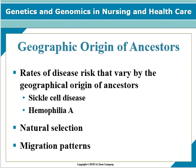Rates of disease risk vary by ancestry. For example, sickle cell disease, which we studied in Unit 2, is common in individuals of African descent, while hemophilia A is rare in people of African descent. Sickle cell disease confers protection against malaria. If you're homozygous for sickle cell you will have sickle cell disease; if you are heterozygous, you will have sickle cell trait and will have protection against malaria. On a population level it's very helpful, but when you look at an individual who's suffering from sickle cell disease, it doesn't appear as helpful.